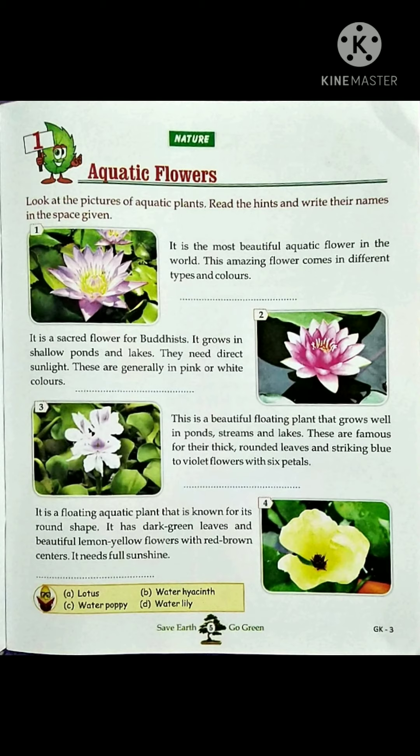The aquatic plants we previously studied include water lily, water hyacinth, and water poppy. In this chapter we have discussed these four types of aquatic flowers.